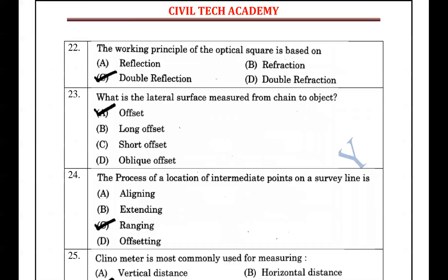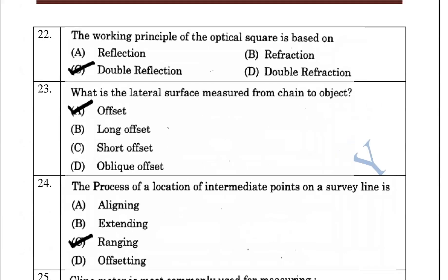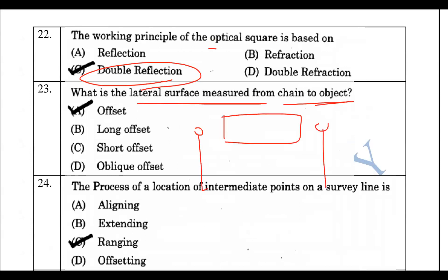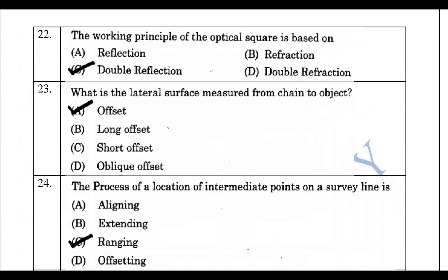Next, the working principle of the optical square is double reflection. The lateral surface distance measured from the chain line to an object is called the offset.